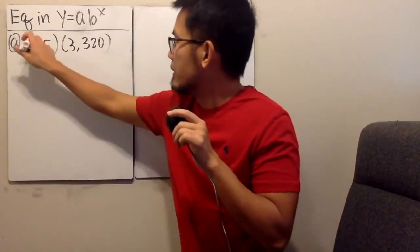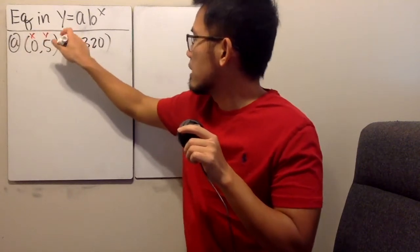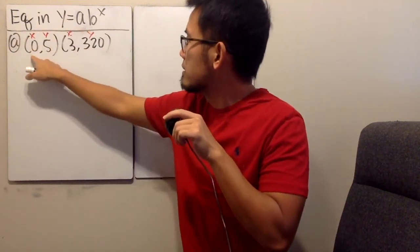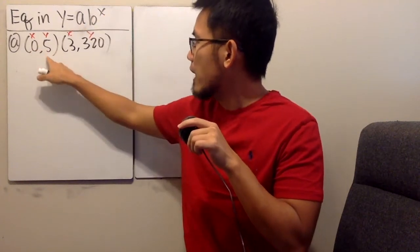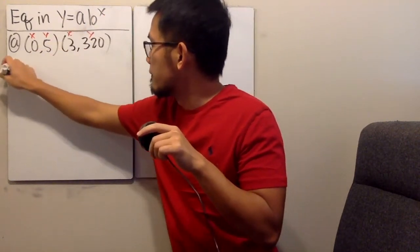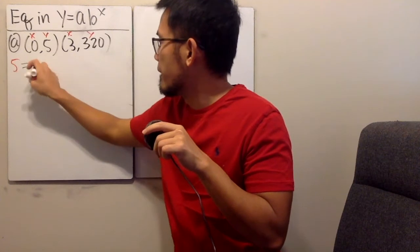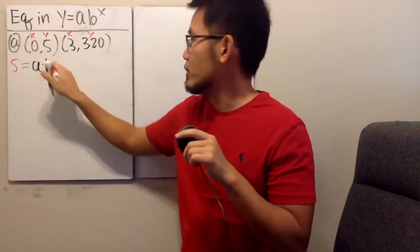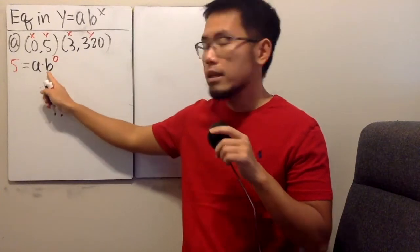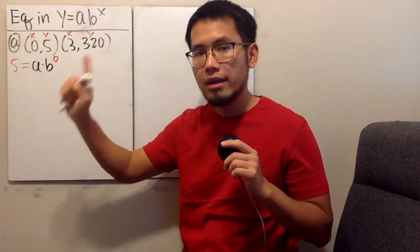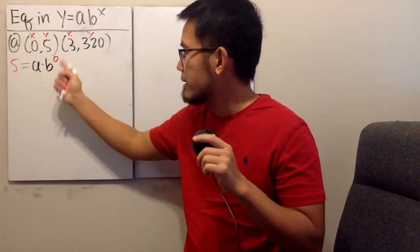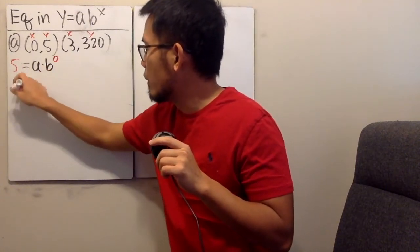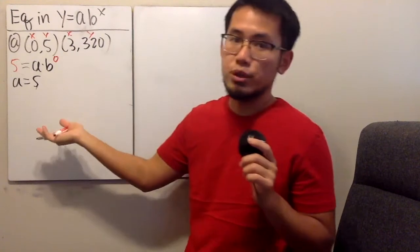Remember, we always have x, y, x, y. This time we start with x equals 0 and y equals 5. So we end up with 5 equals a times b raised to the 0 power. Since b to the 0 power is just 1, a times 1 equals 1, and we get a equals 5 right away, which is pretty nice.